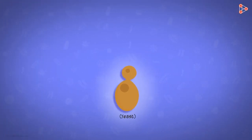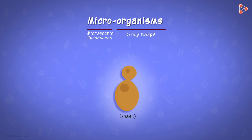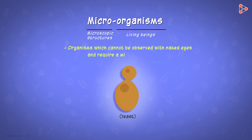These little creatures are called microorganisms. As the name says, micro means very small or microscopic structures, while organisms are living beings. Thus, those organisms which cannot be observed with the naked eye and require a microscope to be seen are the microorganisms.